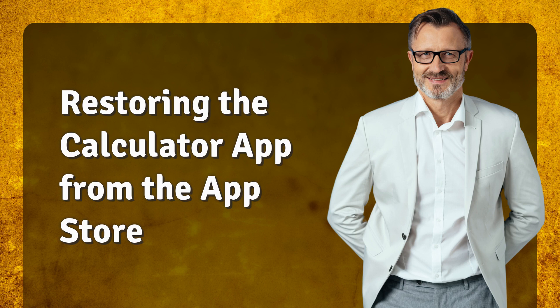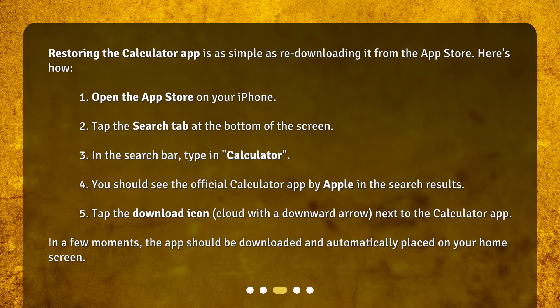Restoring the calculator app from the App Store is as simple as re-downloading it. Here's how: 1. Open the App Store on your iPhone. 2. Tap the Search tab at the bottom of the screen. 3. In the search bar, type in 'calculator'. 4. You should see the official calculator app by Apple in the search results. 5. Tap the download icon — the cloud with a downward arrow — next to the calculator app. In a few moments, the app should be downloaded and automatically placed on your home screen.